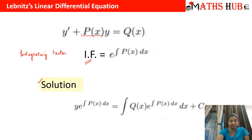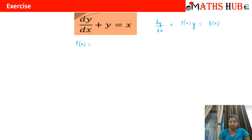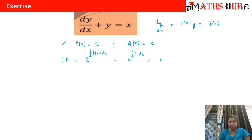Let us work through some examples. The first one is dy/dx + y = x. We compare this with the standard Leibniz equation to find P(x) = 1 and Q(x) = x. The integrating factor is e raised to power ∫1 dx, which turns out to be eˣ.